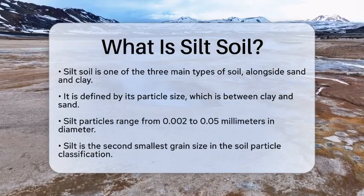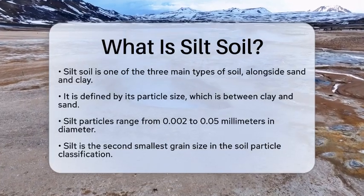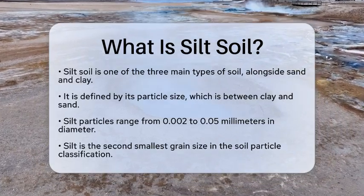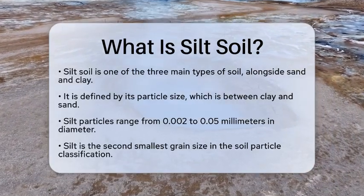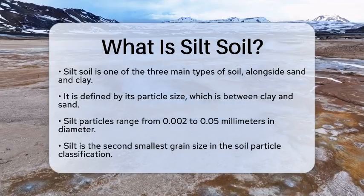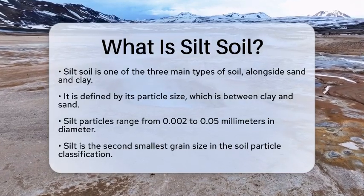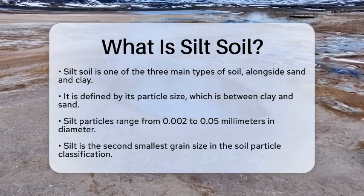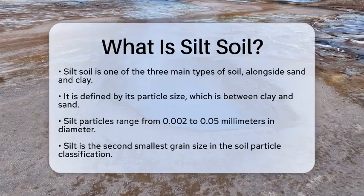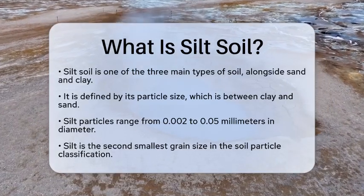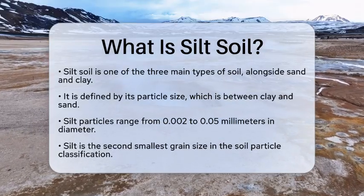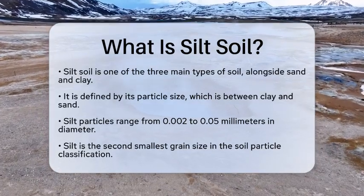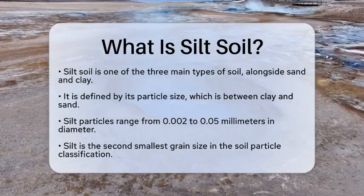Silt soil is one of the three primary types of soil, alongside sand and clay. It is defined by its particle size, which falls between that of clay and sand. Silt particles range in size from about 0.2 to 0.5 millimeters in diameter. This size range places silt as the second smallest grain size in the soil particle grade scale, with clay being the smallest and boulders being the largest.